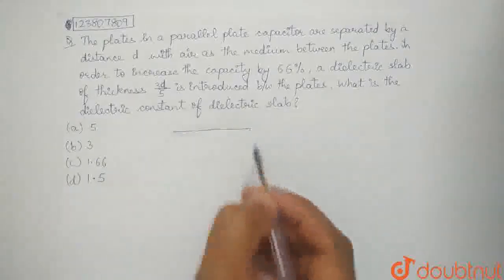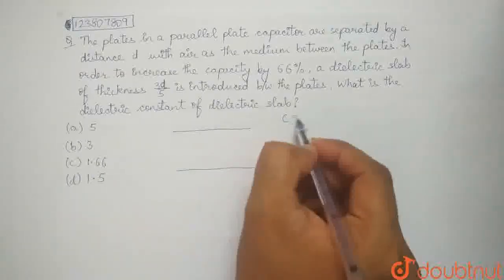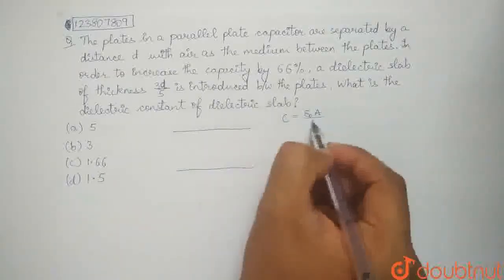So, now, let's see. The question is saying that we have a parallel plate capacitor. It had a capacitance before, which was epsilon naught a by d. This is the capacitance.